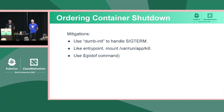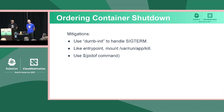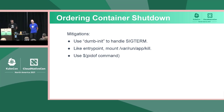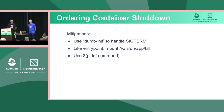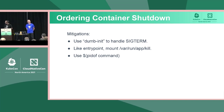Here are some mitigations. One is to use dumb-init — there are two or three implementations, the one I know is by Yelp. It provides an init process that handles SIGTERMs correctly and can fix shell scripts forking so they shut down correctly. Like we did for the entrypoint, you can have your init container copy a kill binary onto the shared directory, and then invoke it knowing the path. You can actually write kill in about 20 lines of Go — just write your own kill command.